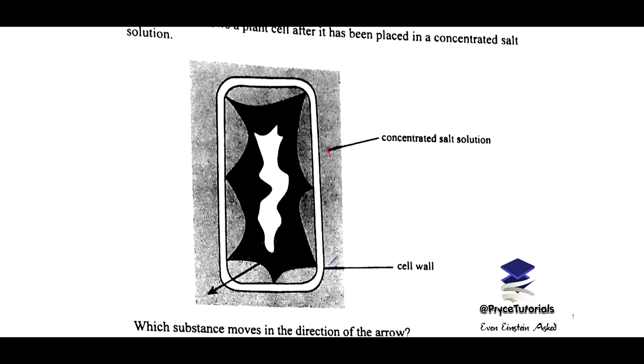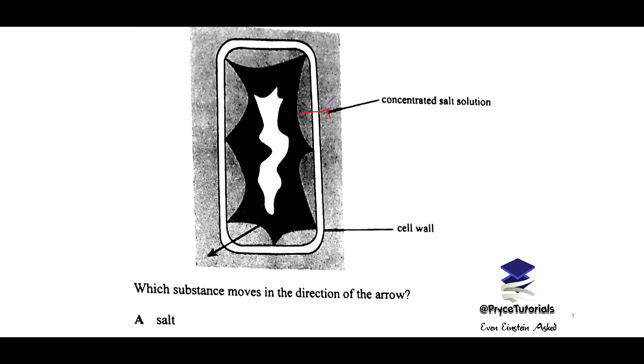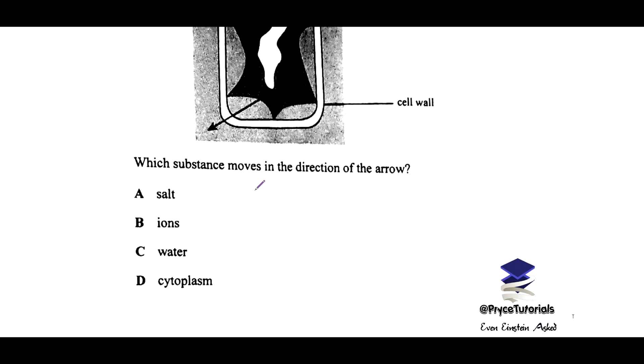So we have a dilute solution here, the cell walls, and we have an arrow moving out there. So water is supposed to be moving out of this cell. The cell is losing some water there, so we want to choose C here as our answer.